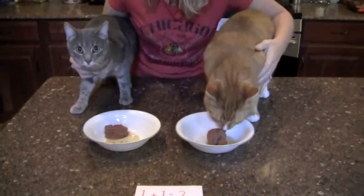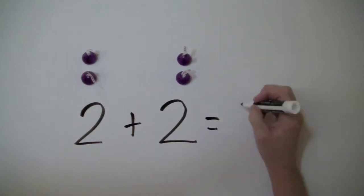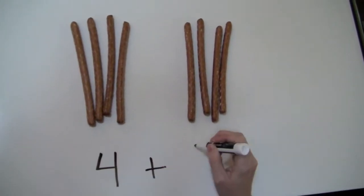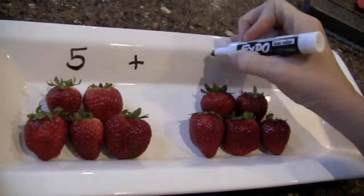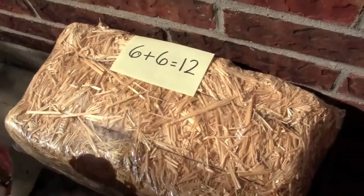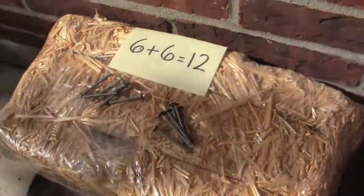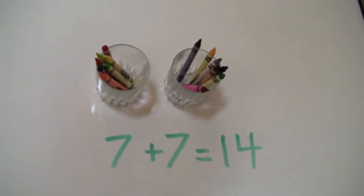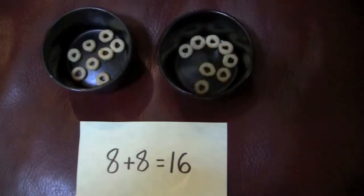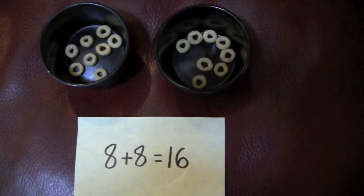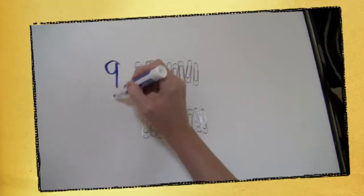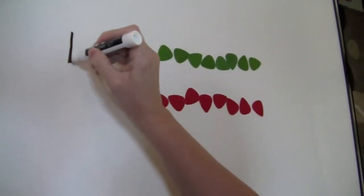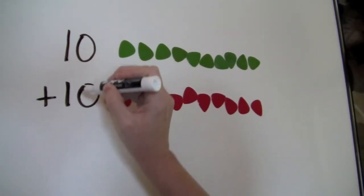1 and 1 are 2, 2 and 2 are 4, 3 and 3 are 6, 4 and 4 are 8, 5 and 5 are 10, 6 and 6 are 12, 7 and 7 are 14, 8 and 8 are 16, 9 and 9 are 18, and 10 and 10 are 20.